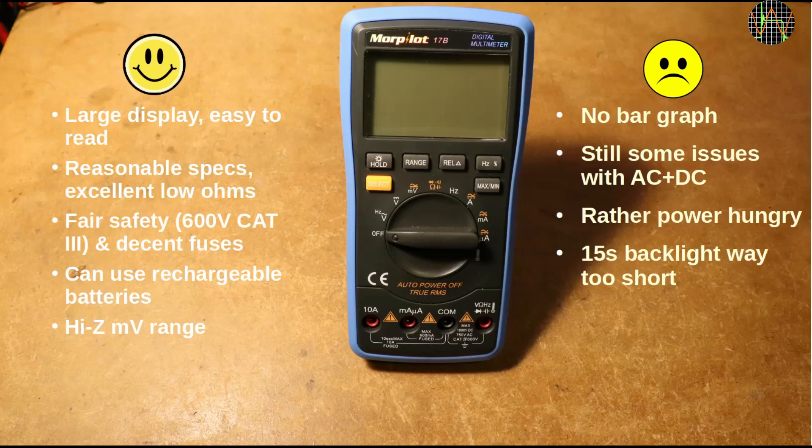AC plus DC is better than many multimeters but still not completely resolved. My usual advice remains for the Morpilot 17B if you suspect a mixed signal always use manual ranging. The meter is rather power hungry, especially with backlight and beep. And speaking of the backlight, 15 seconds is really too short to be useful.